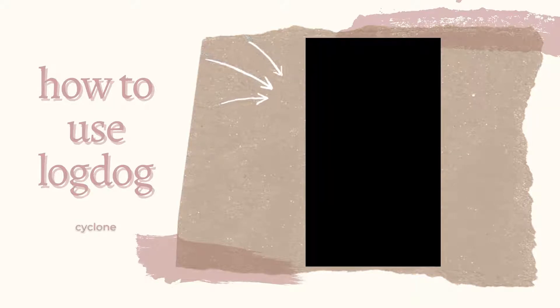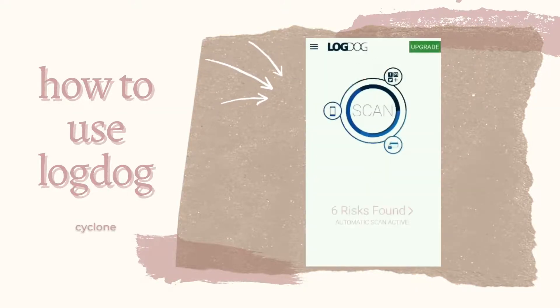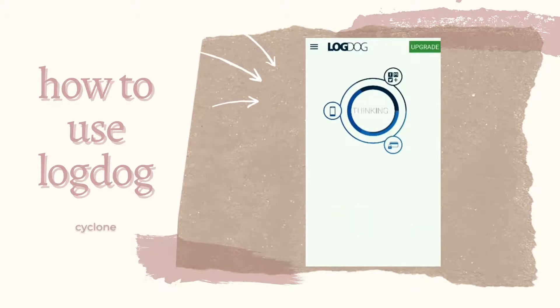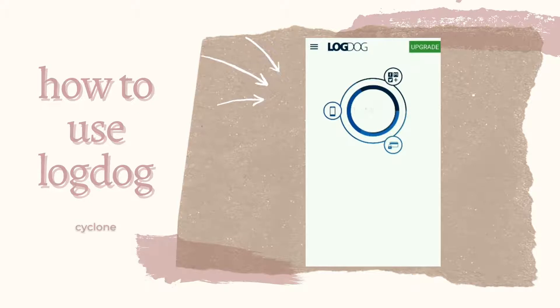To start scanning your mobile, just click the scan button in the middle and this app will crawl into your device to find the weaknesses that it can detect.